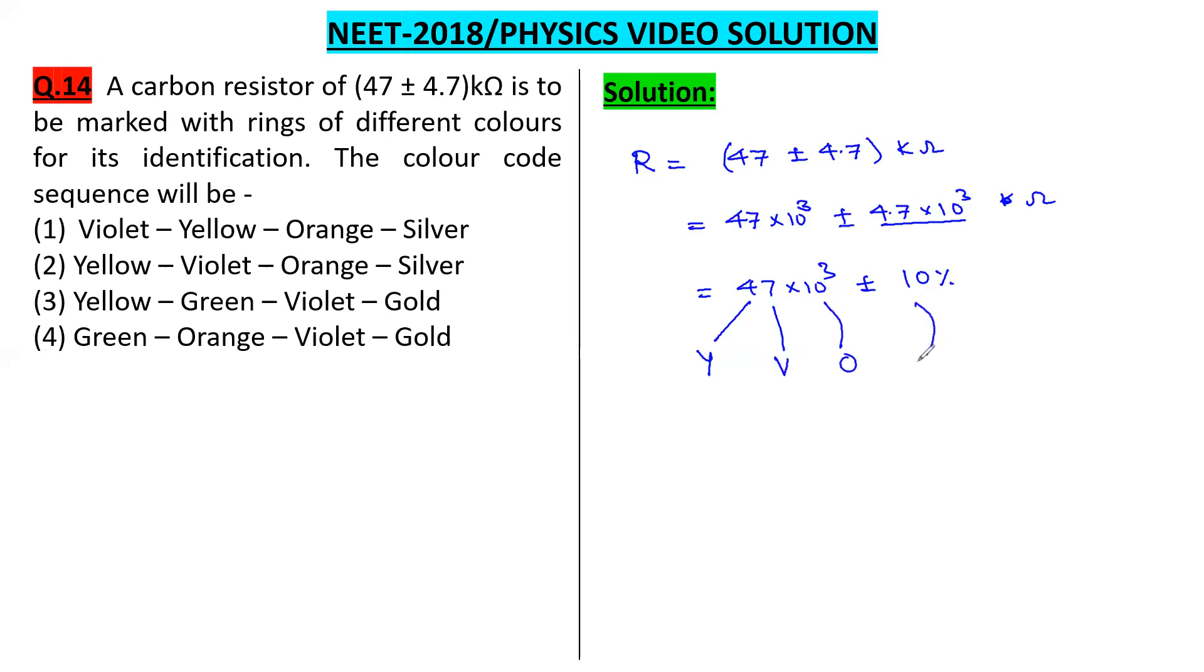And this is for silver color. So the color code would be yellow, violet, orange, silver. And the correct option would be option 2 in this case.